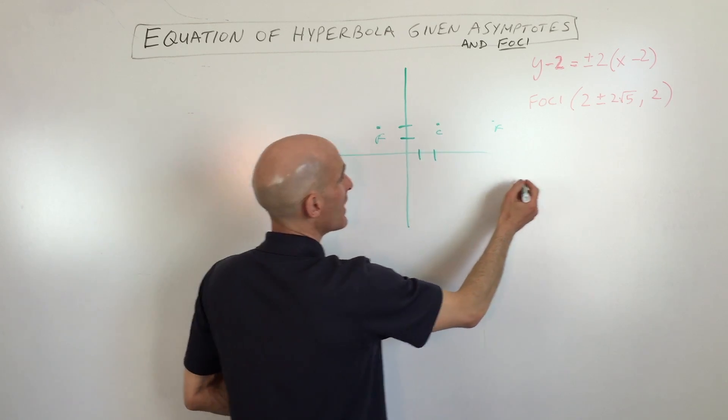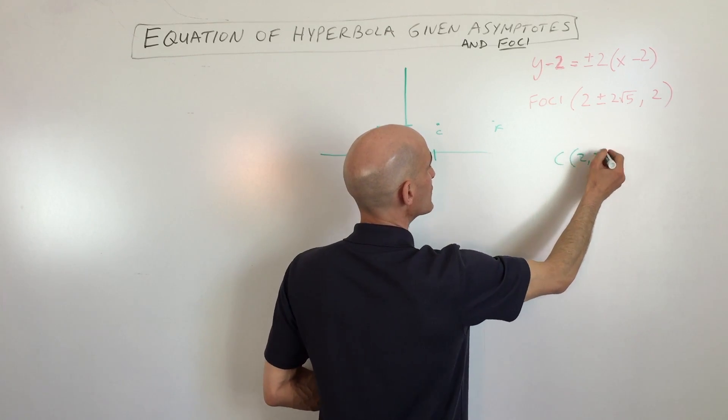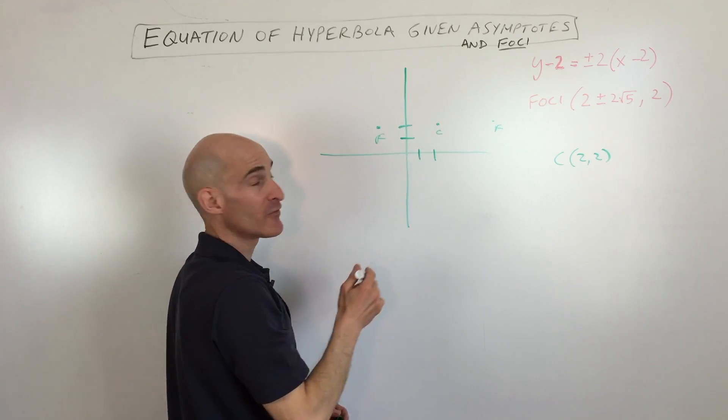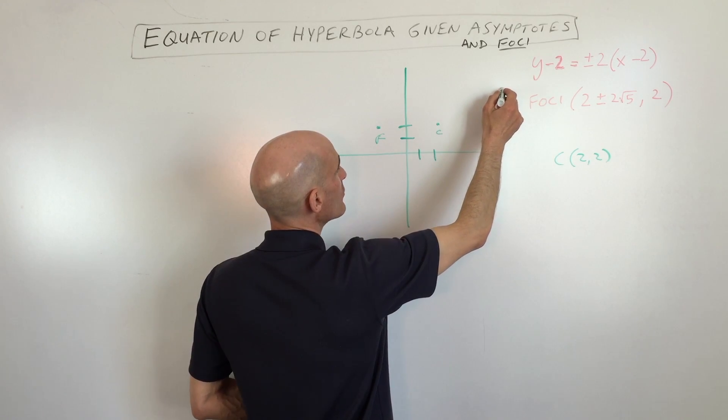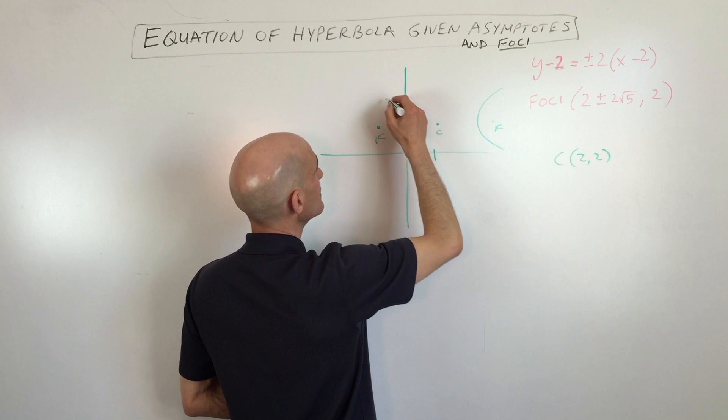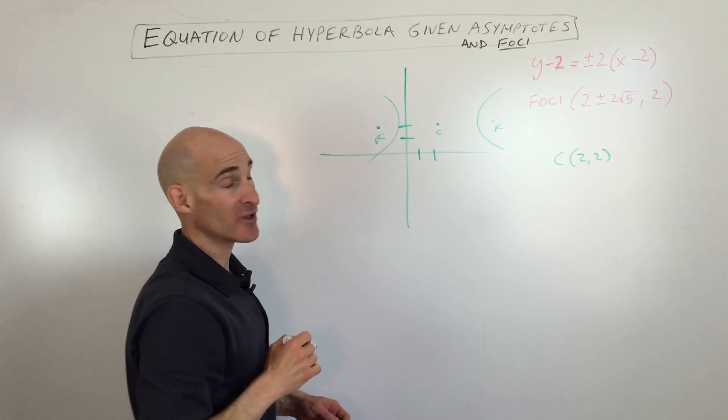So you can see the center is going to be at 2, comma 2, because it's halfway in between the foci. And we know that our hyperbola is going to look something like this and like this, approximately.